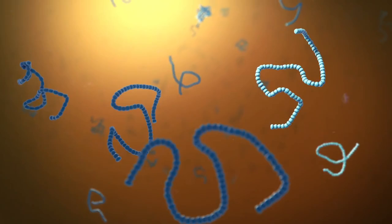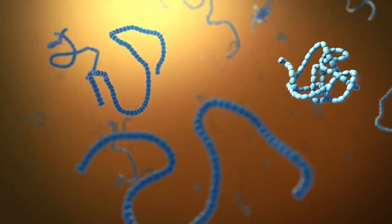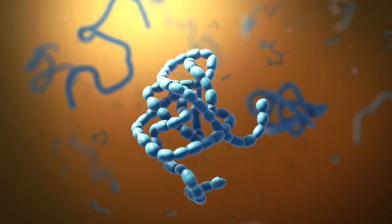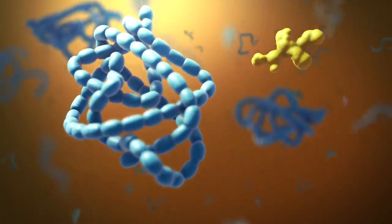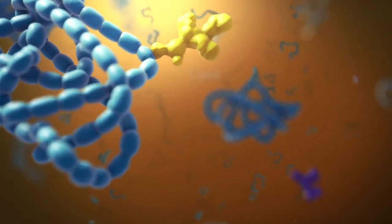As proteins move through the Golgi body, they're customized into forms that the cell can use. The Golgi body does this by folding the proteins into usable shapes, or adding other materials onto them, such as lipids or carbohydrates.